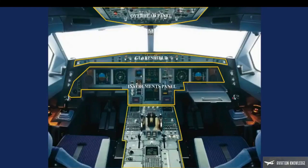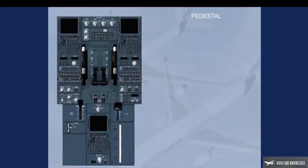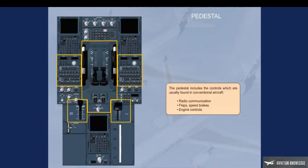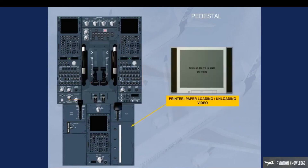Click on the pedestal panel area to display it. The pedestal includes controls which are usually found in conventional aircraft: radio communication, flaps, speed brakes, and engine controls. It also includes the ECAM control panel and the Multi-purpose Control Display Units (MCDU), which are the long-term interface with the Flight Management and Guidance System.